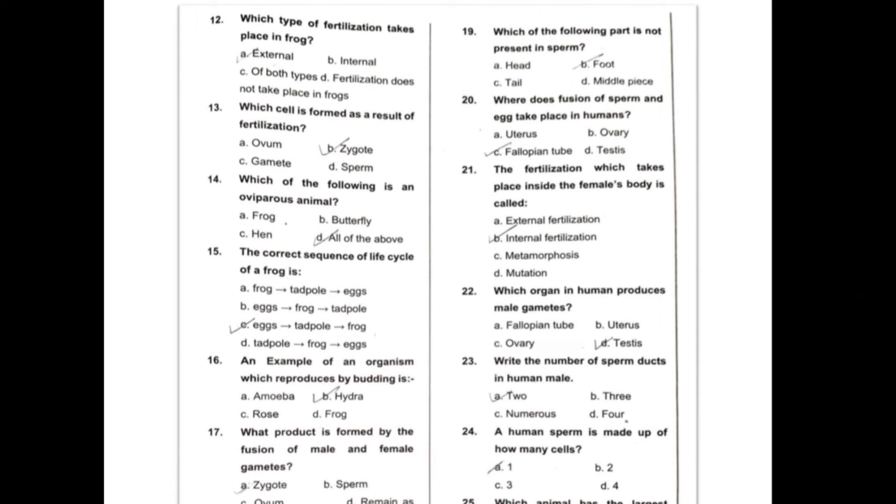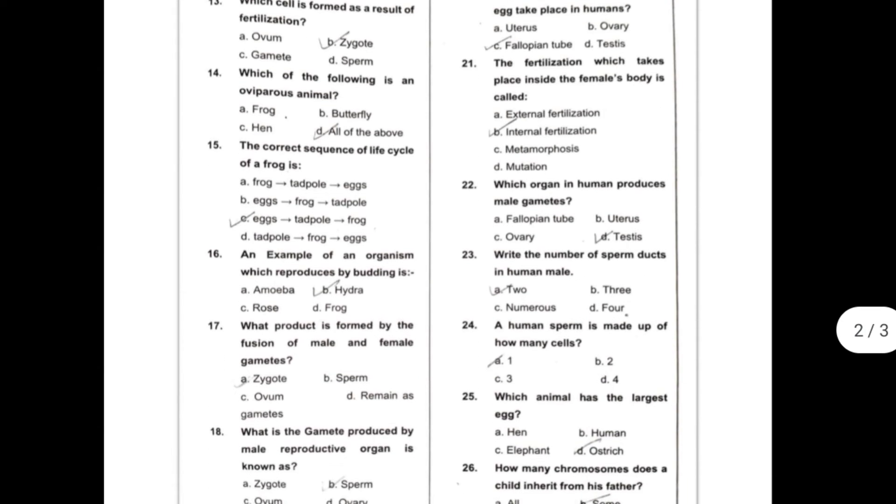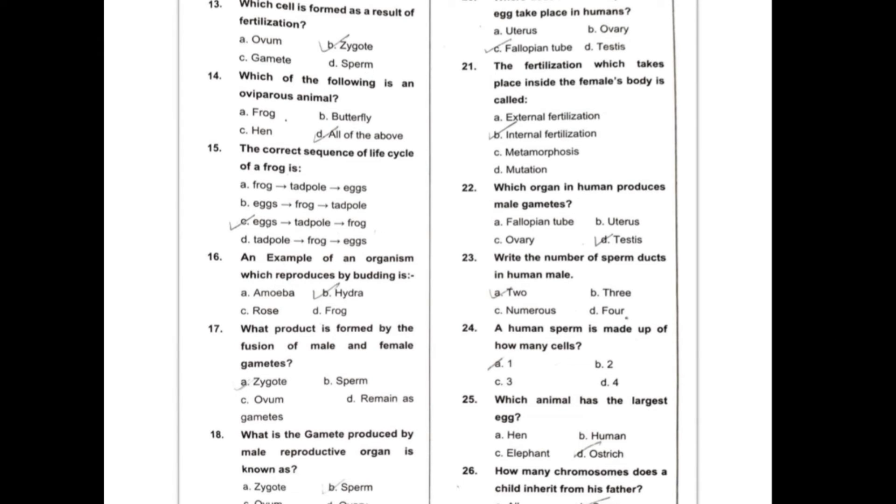Question number 19: Which of the following part is not present in sperm? The answer is foot. Question 20: Where does fusion of sperm and egg take place in humans? The answer is fallopian tube.